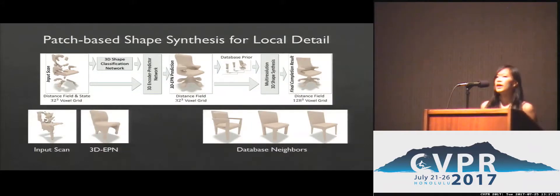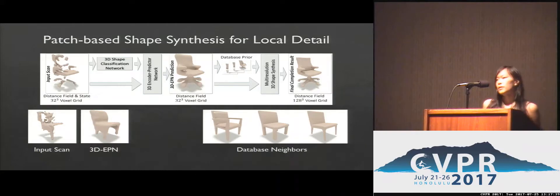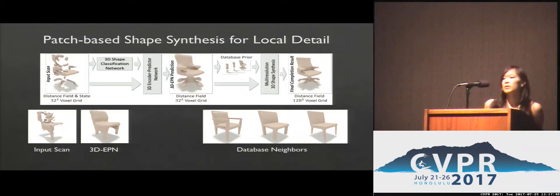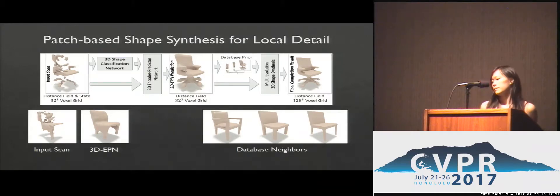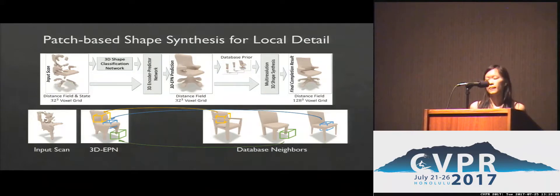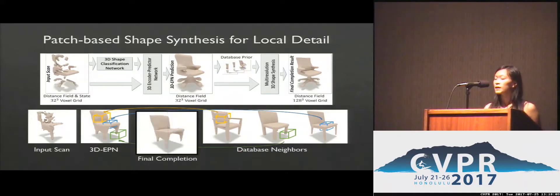Regressing high-resolution output from deep nets is challenging, particularly for 3D. We use CAD model priors to synthesize high-res output, while respecting the global structure of the coarse network prediction. So we take the coarse network prediction and search in a CAD model database for similar models. We then look for similar local patches in these models in order to synthesize local detail, similar to texture synthesis. This produces a high-resolution, complete mesh.